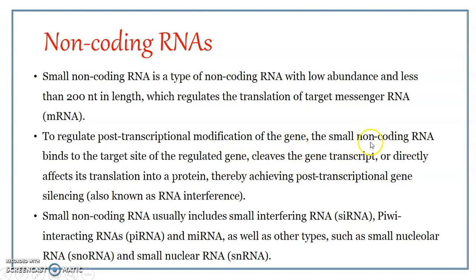Or they may cleave the gene transcript. The first mechanism is that these non-coding RNAs bind to the target site of the regulated gene on the DNA, and this binding can stop the transcription process itself. The second way is by cleavage of the gene transcript — the mRNA is produced by transcription, but those mRNA transcripts produced get cleaved by these non-coding RNAs. Thirdly, they may directly affect the translation of the target mRNA into a protein — the mRNA is not cleaved and remains intact, but it may still not get translated. These are the three methods by which these non-coding RNAs regulate the translation of the target messenger RNA, or regulate the expression of the gene.